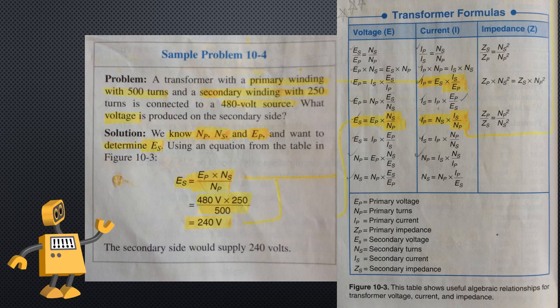Sample problem 10-4: A transformer with a primary winding of 500 turns and a secondary winding of 250 turns is connected to a 480 volt source. What voltage is produced on the secondary side? We know NP, NS, and EP; we need ES. From table 10-3, ES = EP × NS ÷ NP = 480 × 250 ÷ 500 = 240 volts. The secondary side would supply 240 volts.